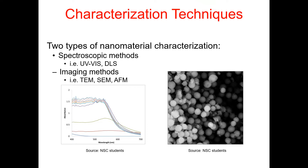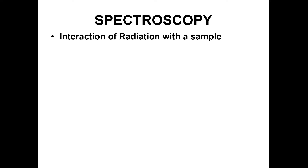Let us try to understand the main concept of spectroscopy. Spectroscopy is basically the technique in which we get the spectrum of a particular material — it's the process of getting the spectrum of a particular material by utilizing some sort of radiations. In spectroscopy we basically have the interaction of radiations with the sample.